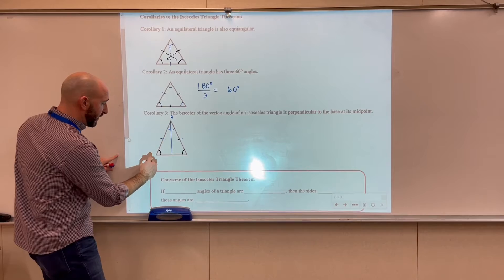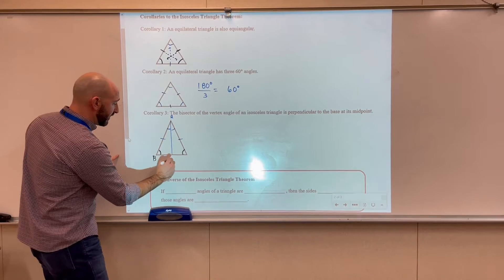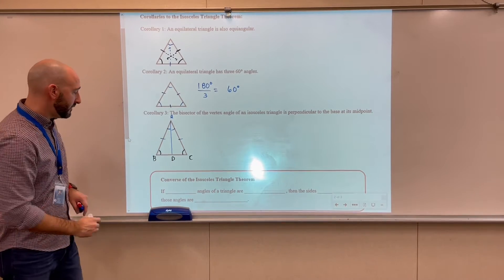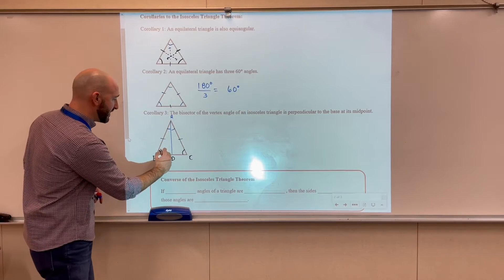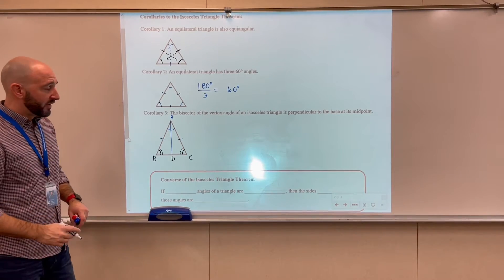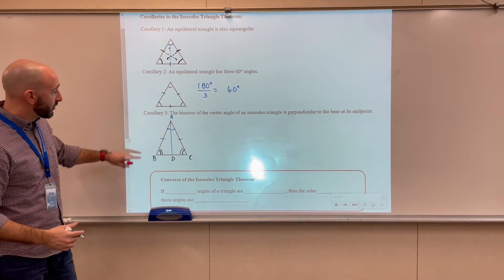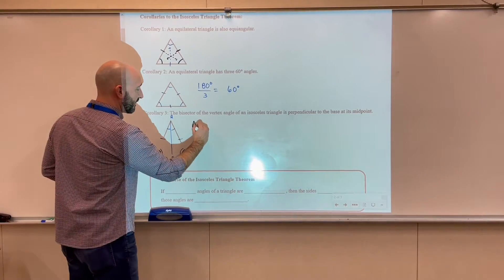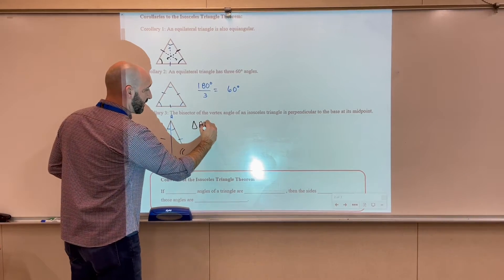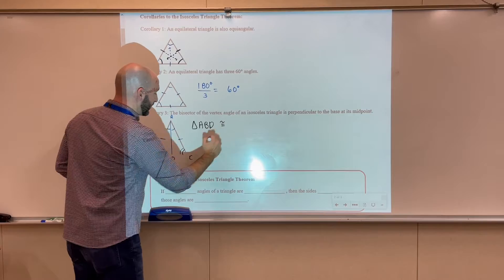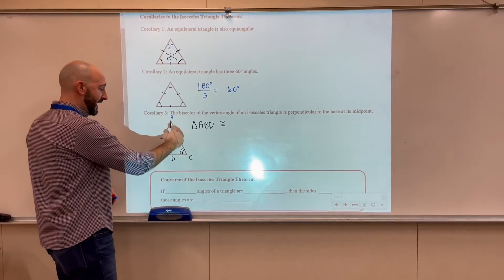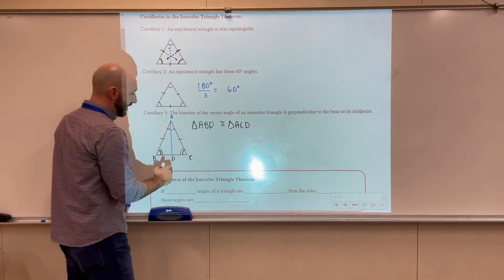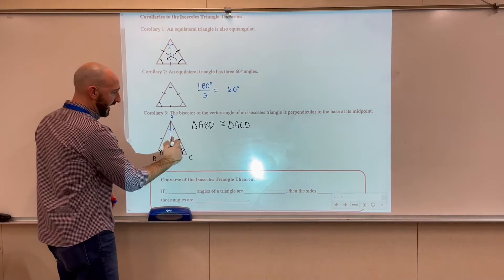I'm going to label the important points here. What we see is that we have two congruent triangles: triangle ABD has to be congruent to triangle ACD, and that's because of angle-side-angle.